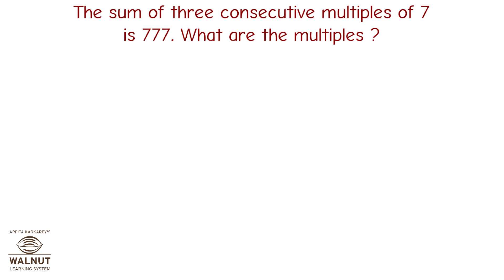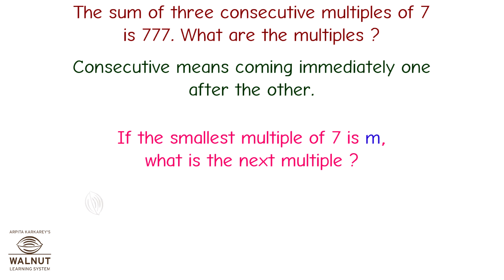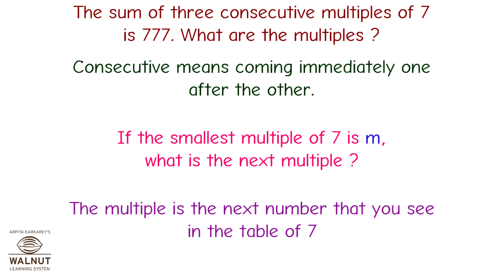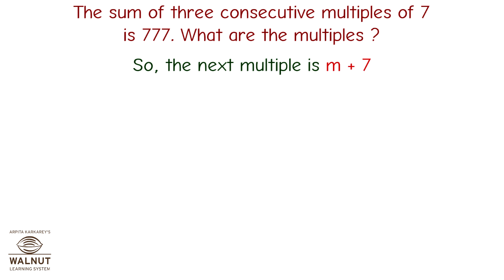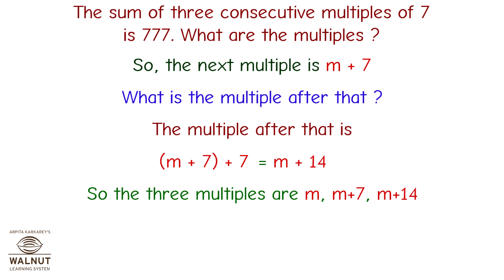Let's take a look at another word problem. The sum of three consecutive multiples of seven is 777. What are the multiples? If the smallest multiple is m, the next multiple is m plus 7, and the one after is m plus 14. So the three multiples are m, m plus 7, and m plus 14.